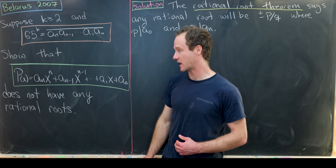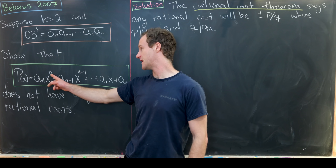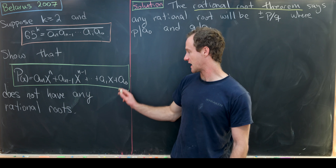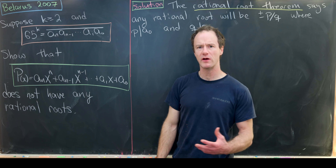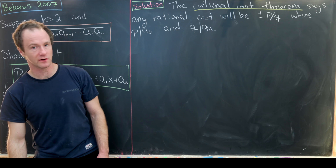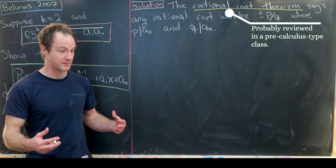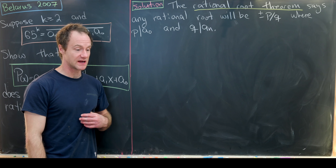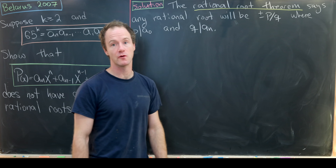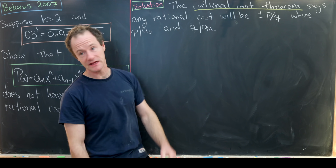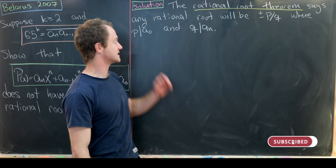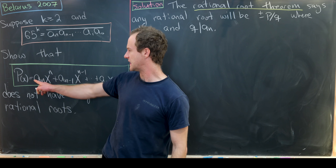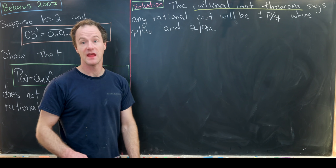Our main goal is to show that the polynomial whose coefficients are these digits does not have any rational roots. The polynomial p(x) equals a_n x^n + a_{n-1} x^{n-1} + ... + a_1 x + a_0. Our main tool will be the rational root theorem, which says the only possible rational roots are of the form ±p/q where p divides the constant term a_0 and q divides the leading coefficient a_n.